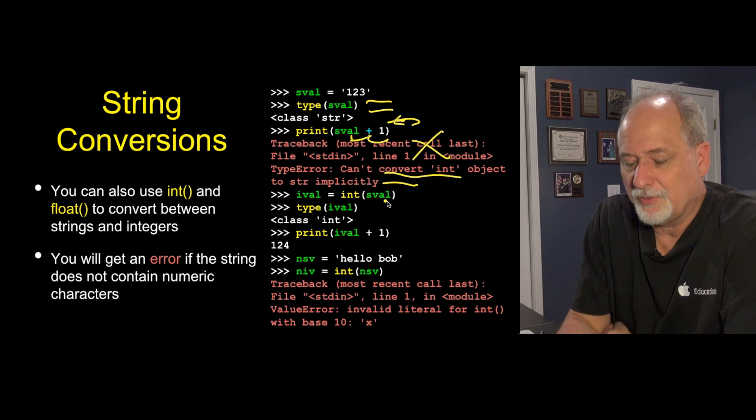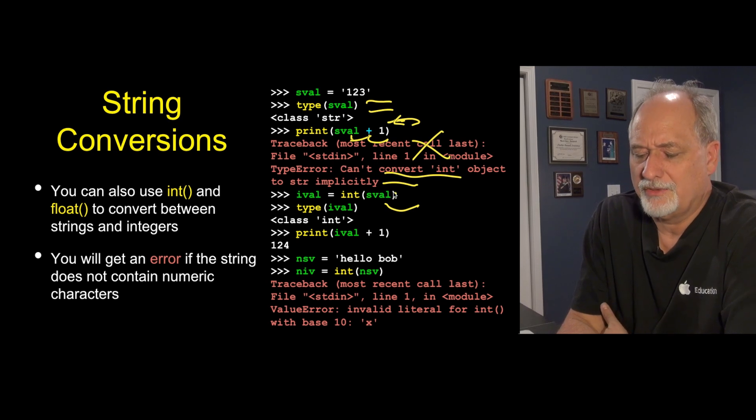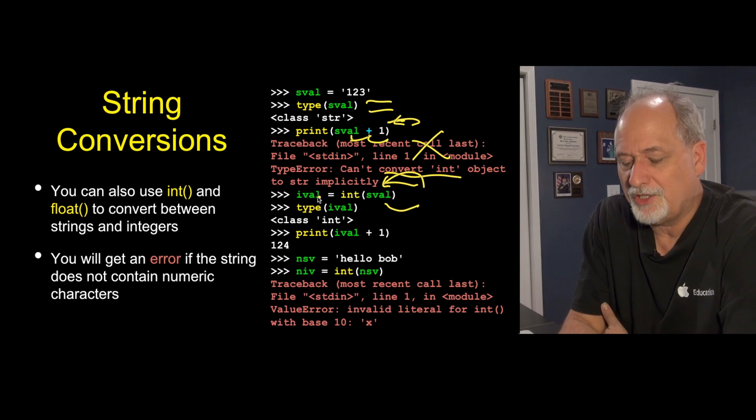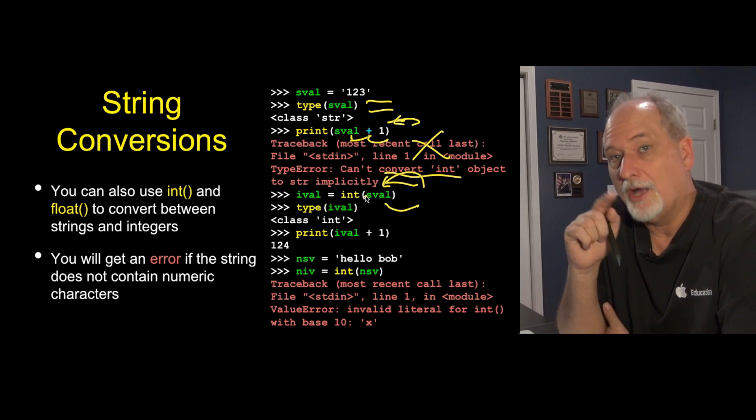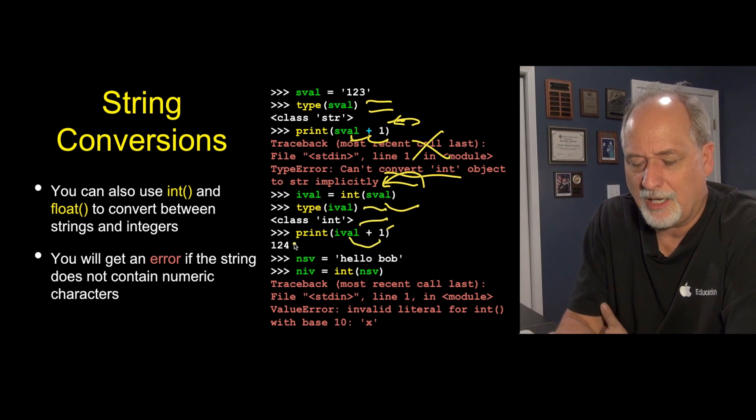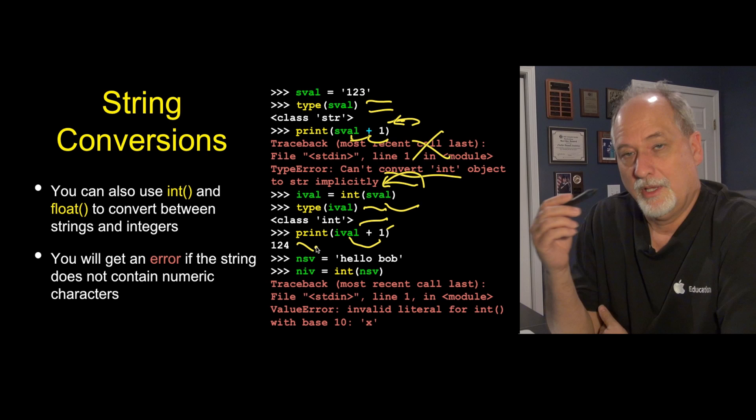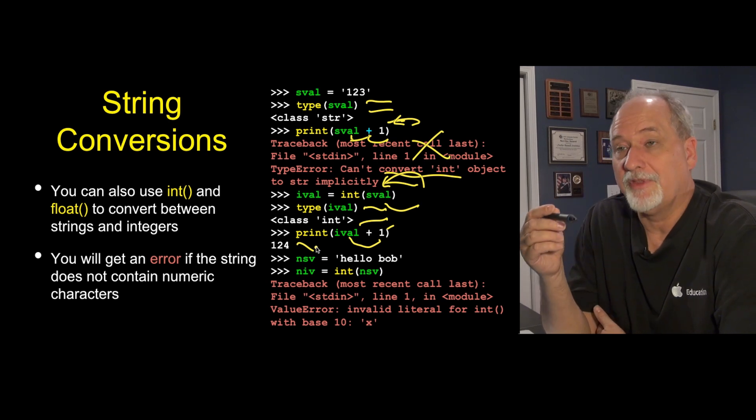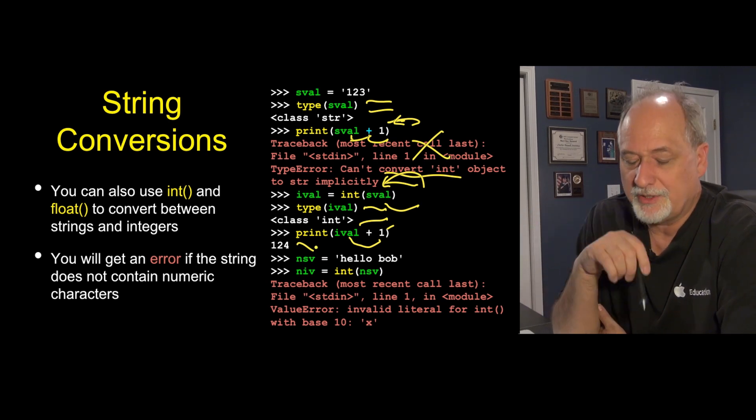But we can convert this. We can call the int function, which is like the float function, and pass a string in. So it says take this and turn it into an integer. Take the input of sval, which is the string 1, 2, 3, and give me back an integer representation of that, which is going to be 123. So we say, what kind of thing do we get back? Well, we got back an integer. We can now add 1 to it and get 124. So you have to manage the type of things, and you can convert from one type to another.